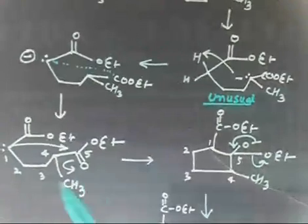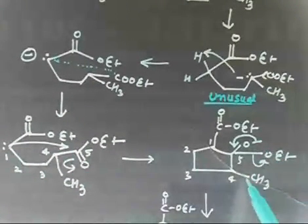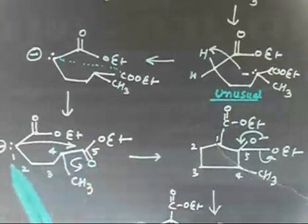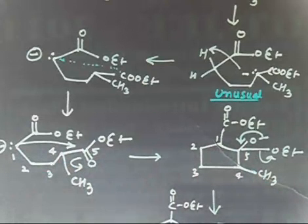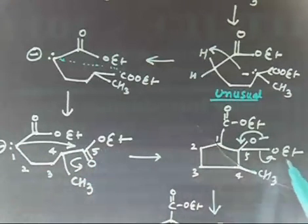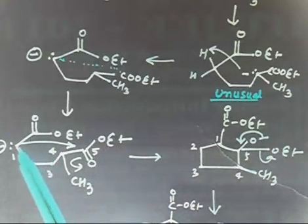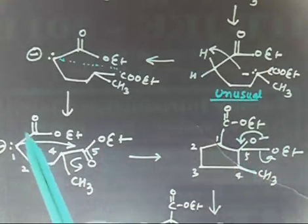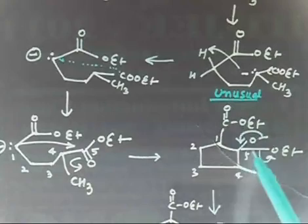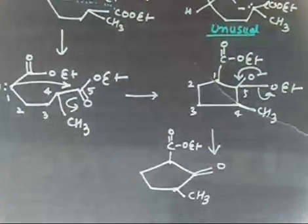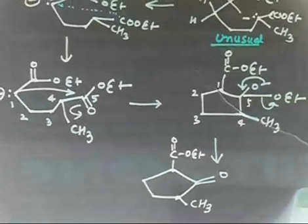So this is the same COOEt here, and I have CH3. If I now attack on this carbon and open this one, I will add these two bonds. You will have O⁻, OEt, CH3, COOEt — and this is carbon 1,2,3,4,5 — so now you have a five-membered ring. Carbon 4 contains CH3, carbon 5 contains O⁻ and OEt, and carbon 1 has COOEt. Now if I return this negative charge, it goes up, and I will have the final product.